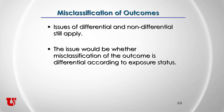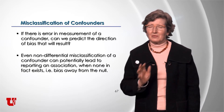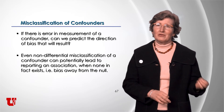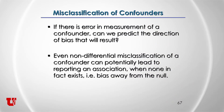Study outcomes can also be misclassified, and issues of differential and non-differential still apply. The issue would be whether misclassification of the outcome is differential according to exposure status. Finally, there's misclassification of confounders. If we need to control for a confounder in our analysis, we must have a good measurement of it. If there's error in measurement of a confounder, we probably can't predict the direction of bias — even non-differential misclassification of the confounder can lead to failing to control for the true confounding effect, and therefore reporting an association when none exists or bias away from the null.